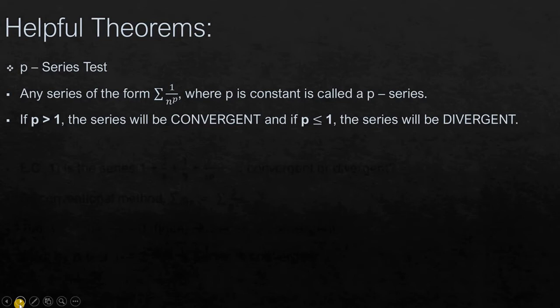The convergence and divergence of a p-series depends upon the value of p. That is, if p is greater than 1, the series will be convergent. If p is less than or p is equal to 1, the series will be divergent.